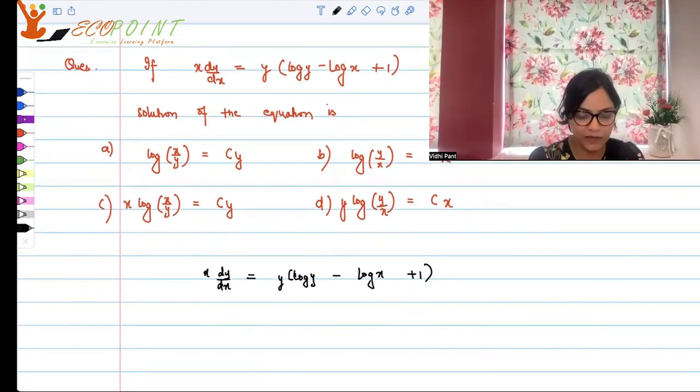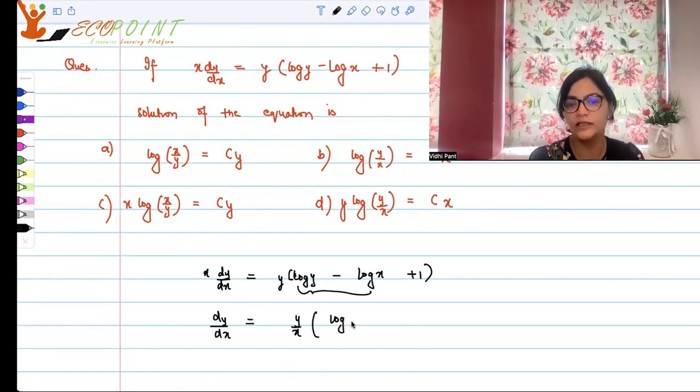That means dy by dx is equal to y by x. x can come down here basically, and if you observe here, it's log y minus log x which is basically the same as saying log y upon x plus 1, right?